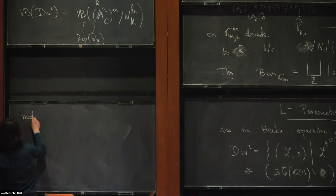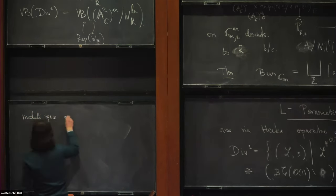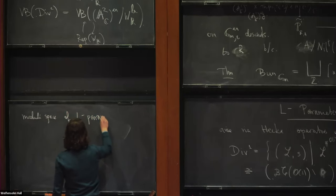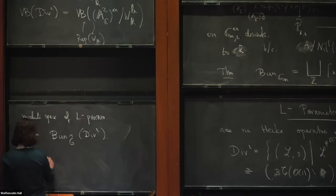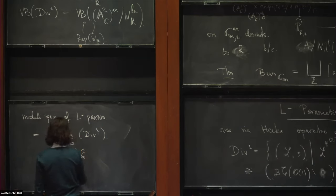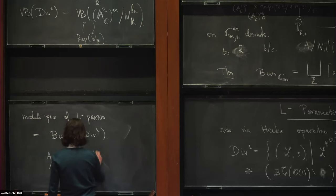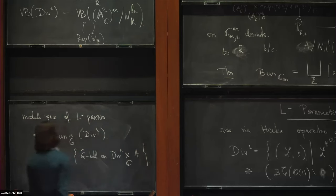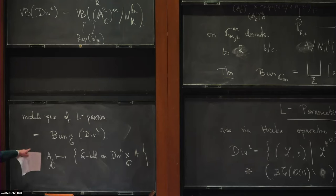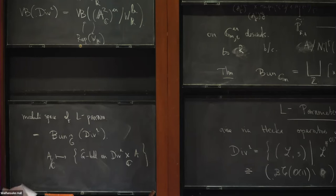The moduli space of L-parameters will be the moduli space of G-hat bundles on Div1, in a much more naive sense: you send any A to G-hat bundles on Div1 base-changed from C to A. I don't know how this is really related to the moduli space that Vogan defined. For GL2, one can write down interesting maps from Vogan's moduli space towards this stack, but I don't claim to understand how the general relation works.